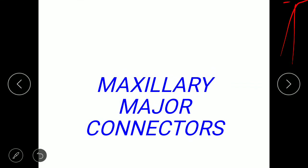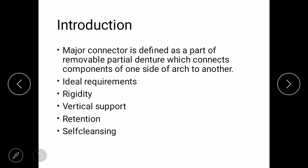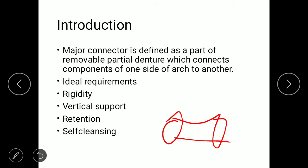Hello everybody, today we are going to see about the maxillary major connectors, which are a part component of removable partial denture. As we described some overview about components of RPD in a previous video, check it out. A major connector is defined as the part of a removable partial denture which connects the components of one side of the arch to the other side. The various requirements involved in the major connector are: rigidity, vertical support, indirect retention, patient comfort, and self-cleansing.